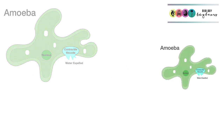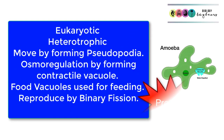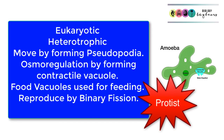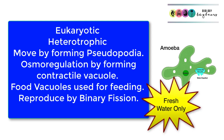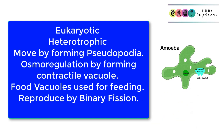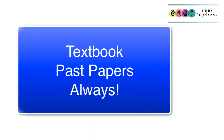The amoeba is a protist, therefore it's eukaryotic. It's heterotrophic, meaning it cannot make its own food. It moves by forming projections known as pseudopodia. It osmoregulates, if it's a freshwater variety, by forming a contractile vacuole, and it feeds by surrounding its food and forming food vacuoles into which digestive enzymes are secreted. This is just a summary video — always use your textbook and do past papers, checking the answers. Good luck.